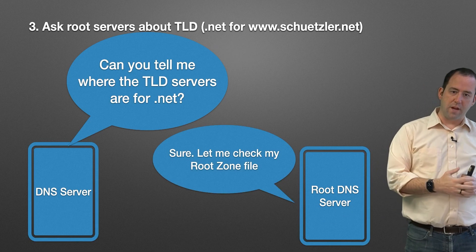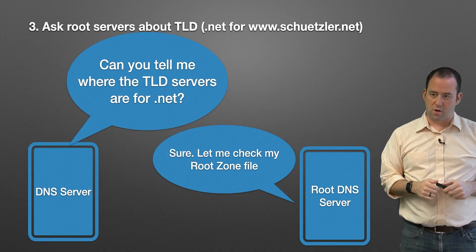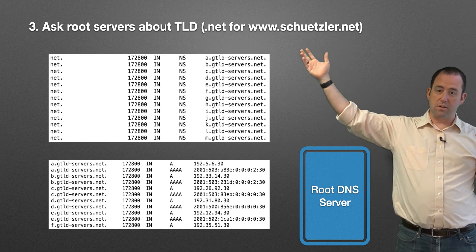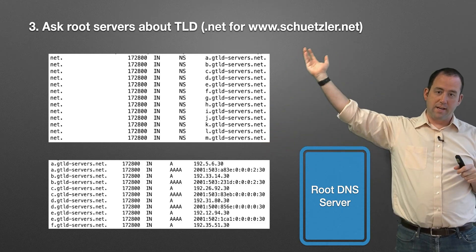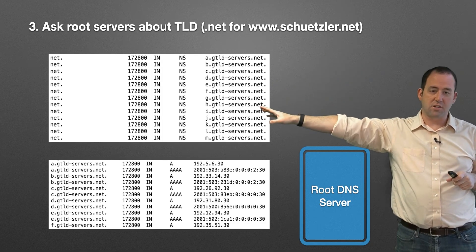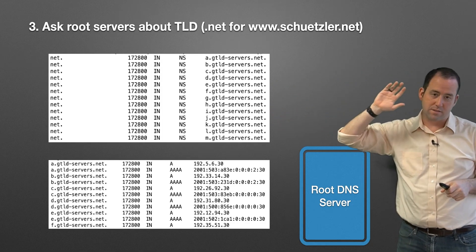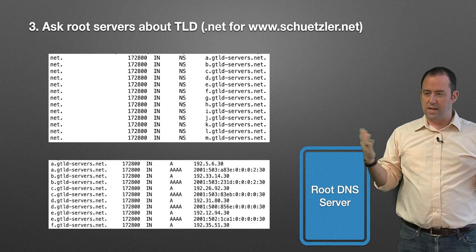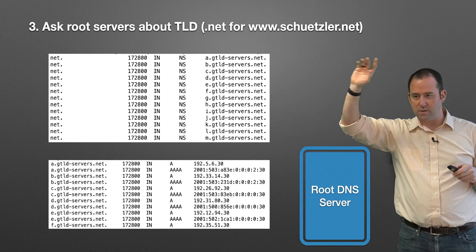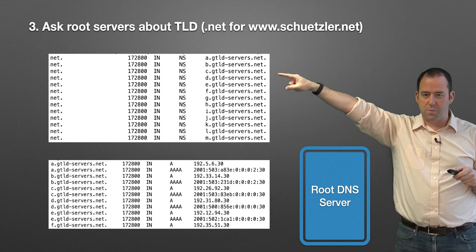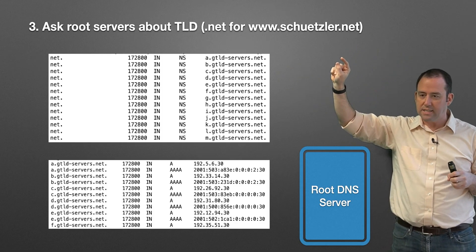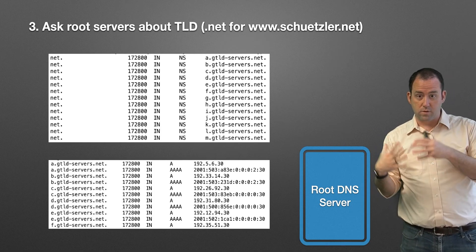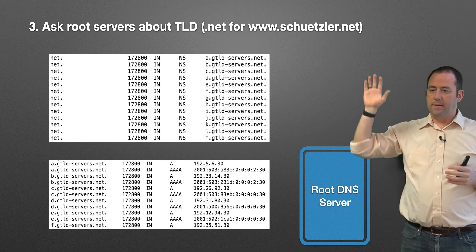The DNS server asks the root name servers, and they check the root zone file. The root zone file has a list of all of the top level domains. The root DNS server looks in that root zone file and finds the section for .NET. There are sections for .com, .aws, .ninja, .unicorn — whatever top level domains exist. For .NET, it says these are located at a.gtldservers.net, b.gtldservers.net, c, d, e, f, g — these are different from the root servers, this is .gtldservers.net.